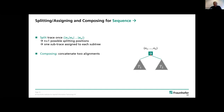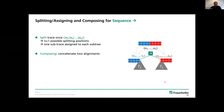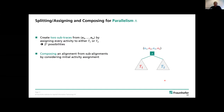For the sequence operator, we first execute T1 then T2, so we must assign a subtrace to each subtree. This results in n+1 possible splitting positions. Assume we split in the middle: a1 through ai goes to the left subtree, ai+1 through an to the right. We then obtain alignments for the subtraces and simply concatenate them to get an alignment for the whole tree.